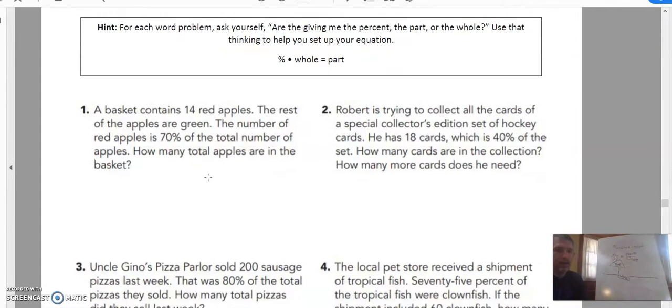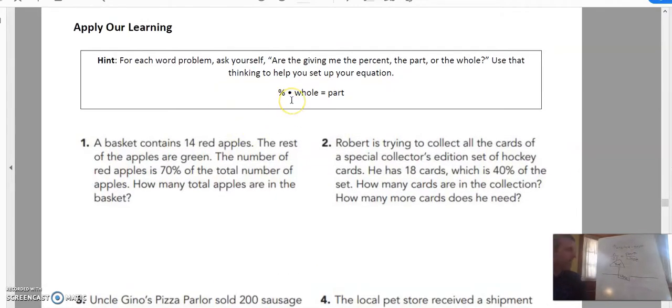The number of red apples is 70% of the total number of apples. How many apples are in the basket? Well, let's look at our phrases here. I'm going to go about this in the way of a ratio. You know what? Just to be consistent with our equation, I'm going to do that. So a basket contains 14 red apples. Red apples there.